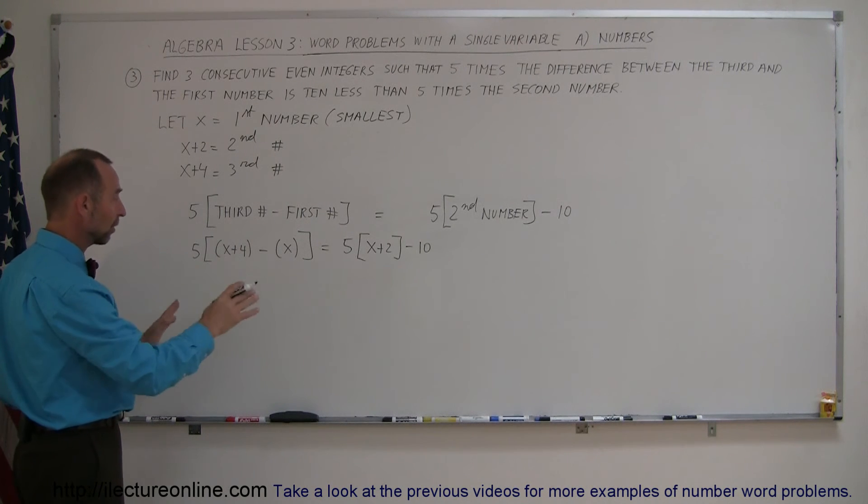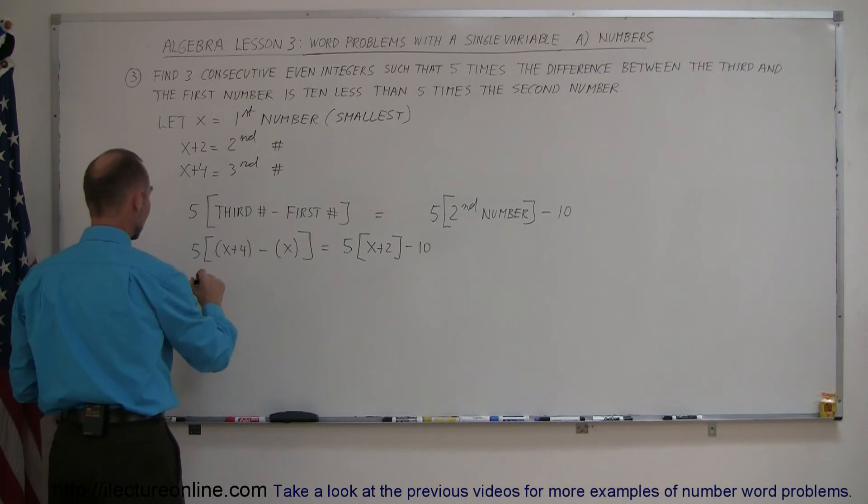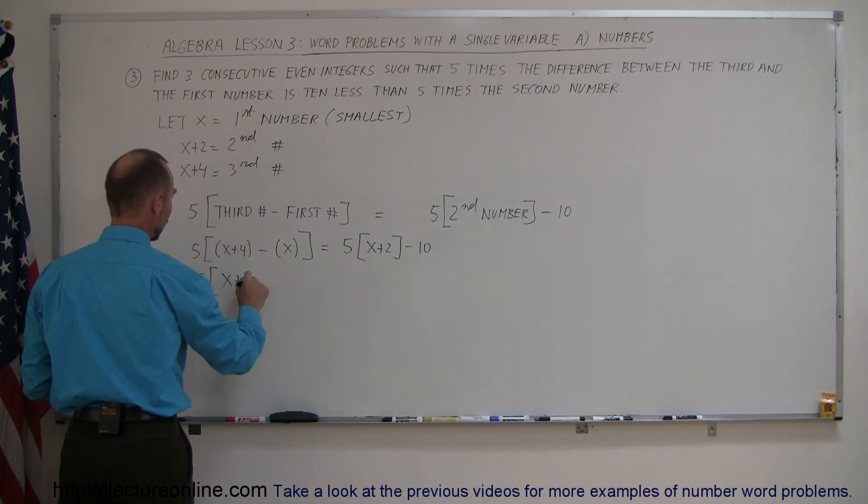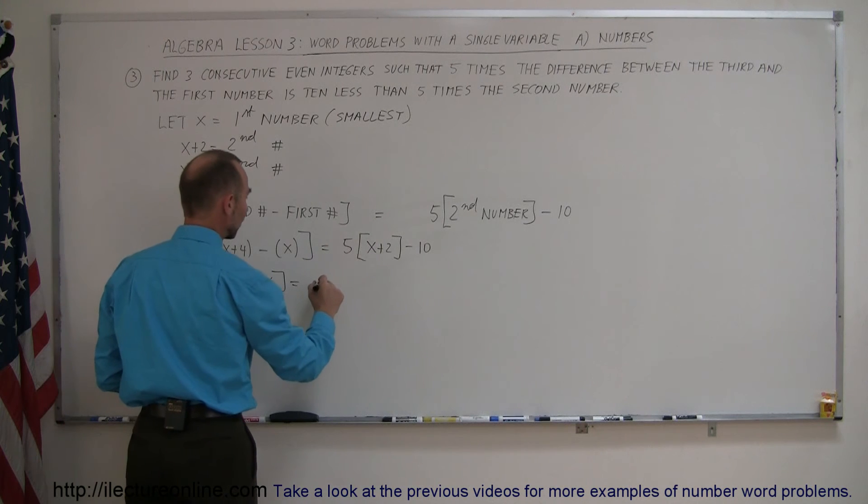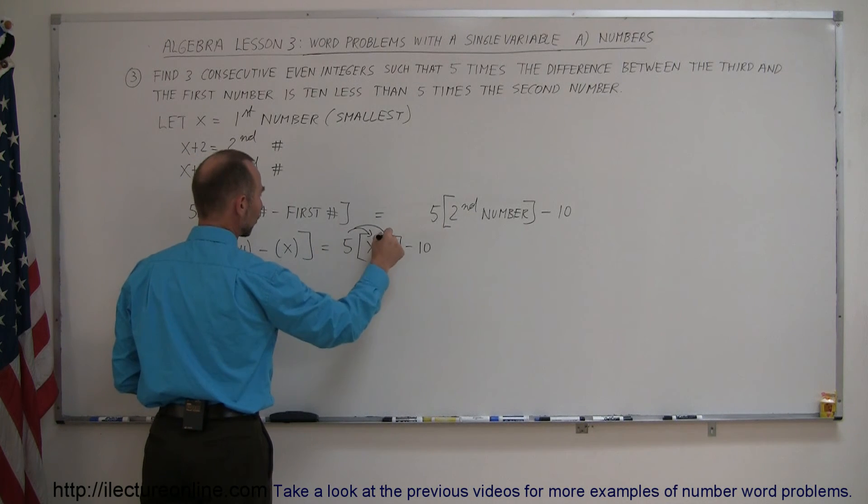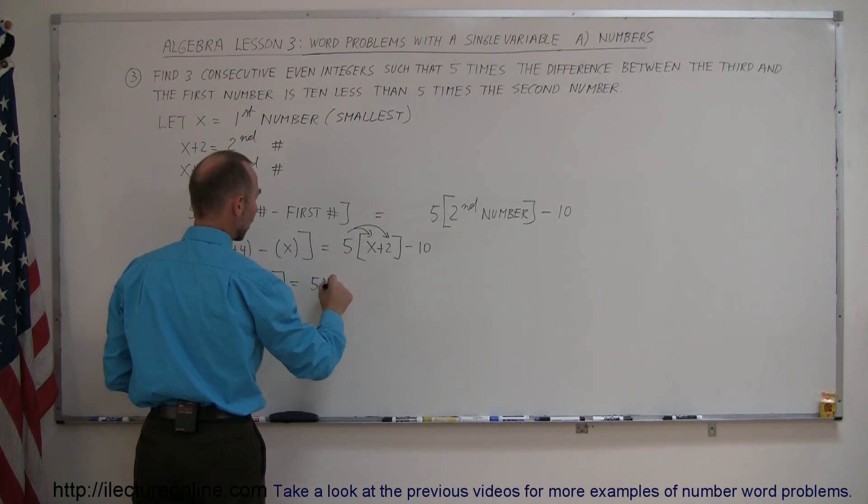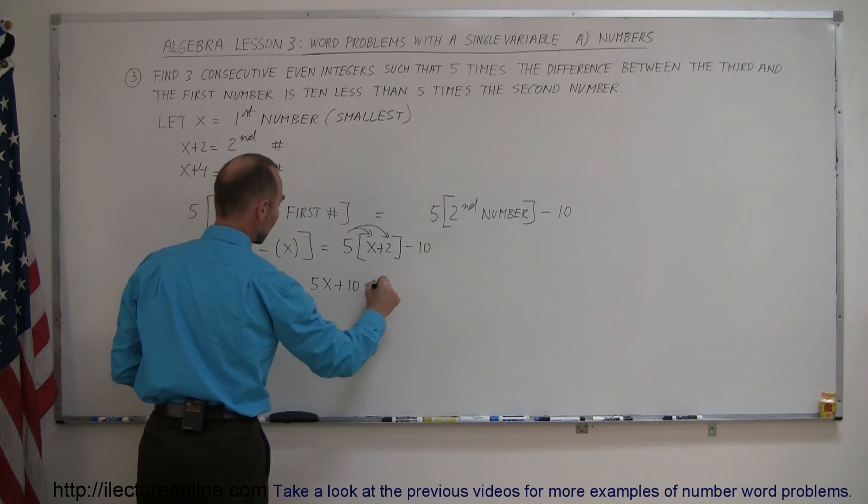So first we want to get rid of the parentheses and the brackets. So we can say that 5 times x plus 4 minus x is equal to, we can already multiply this out. So 5 times x and 5 times 2. That gives us 5x plus 10. And then we still have the minus 10 here.